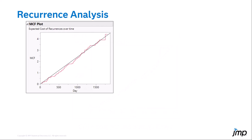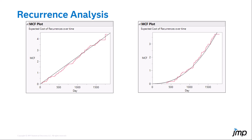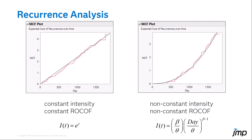A linear MCF plot is consistent with a constant failure rate. Curvature in this plot indicates that the reliability is either improving or degrading. The derivative of the MCF is the intensity function, I of t. I of t gives the repair rate, or rate of occurrence of failures — also called ROCOF — at time t.